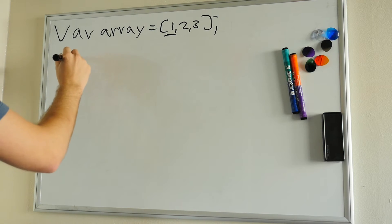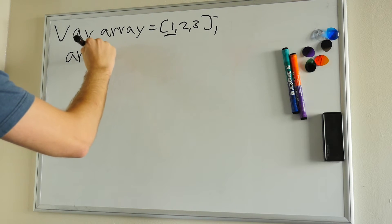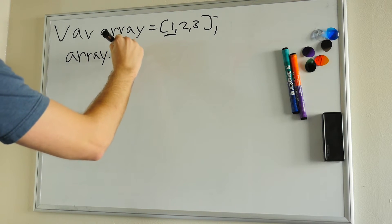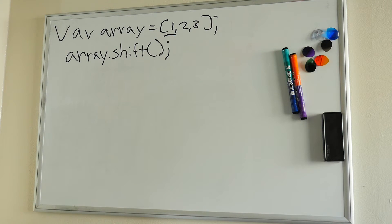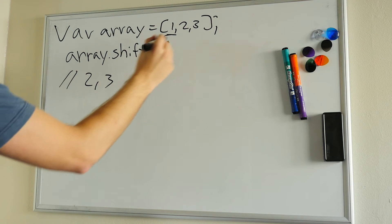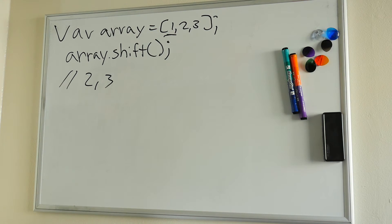If we were to call array.shift(), the output of the array or what the array would contain would be the numbers 2 and 3. One would have been deleted from it, and the index values for this would now be 0 and 1. Everything would have shifted to the left one.